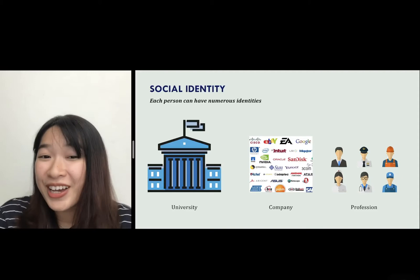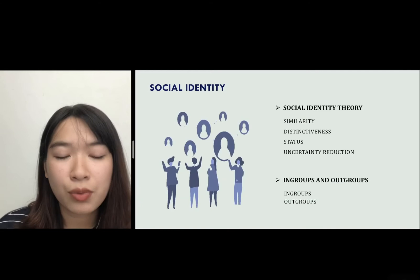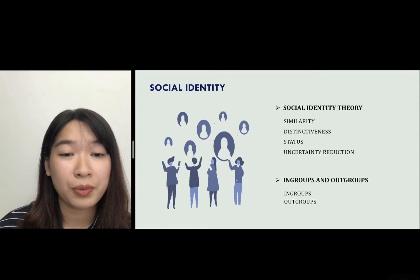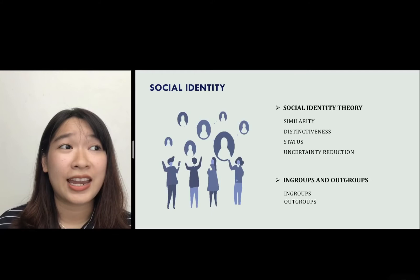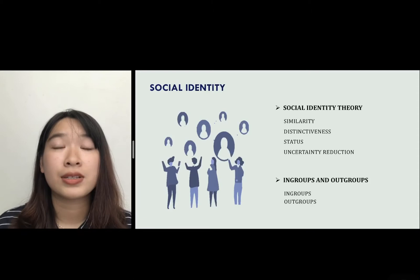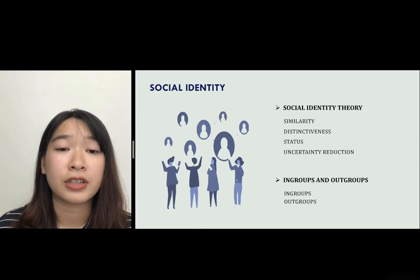Another way to classify groups is in-groups and out-groups. In-group favoritism occurs when a member inside the group sees their group members as superior to others and sees other people as all the same. Whenever there is an in-group there is also an out-group — the out-group means everyone else except the members of the in-group. The out-group also refers specifically to an identified group that is especially known by the in-group members.